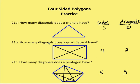How many diagonals does a quadrilateral have? A quadrilateral is a four-sided figure, and it has non-consecutive vertices in two locations, so it has two diagonals.